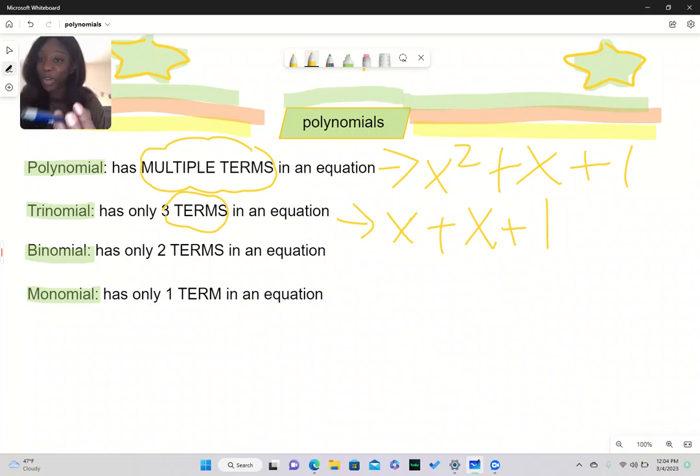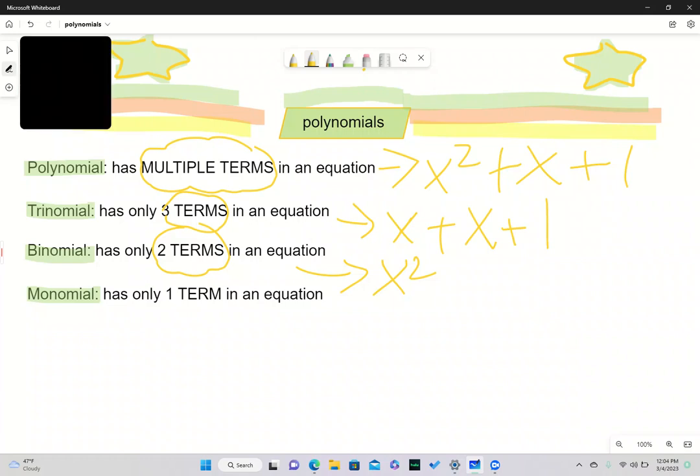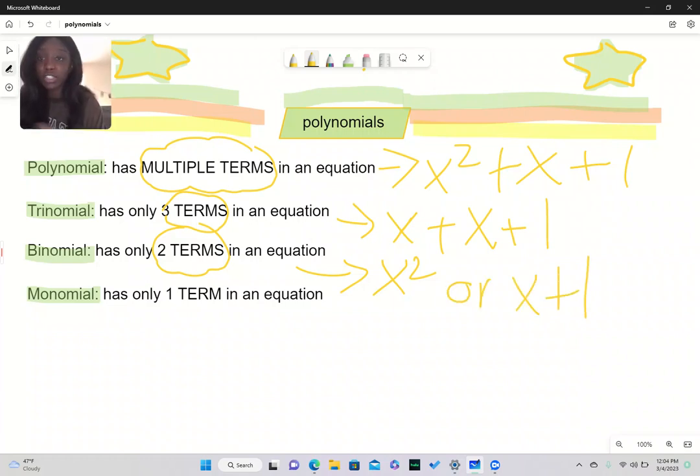Next we have the binomials. A binomial only has two terms in an equation. So it could be written out as x plus x squared, or x plus 1, and they both count as two terms.